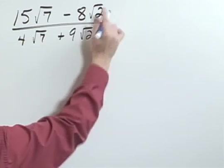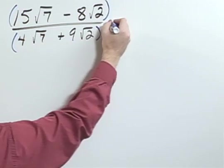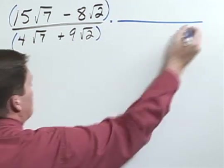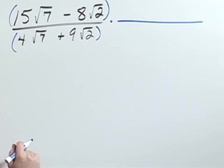Well remember since this is a fraction bar that also means that it's a grouping symbol because what I want to do is multiply by something that will make all of the radicals in the denominator go away.